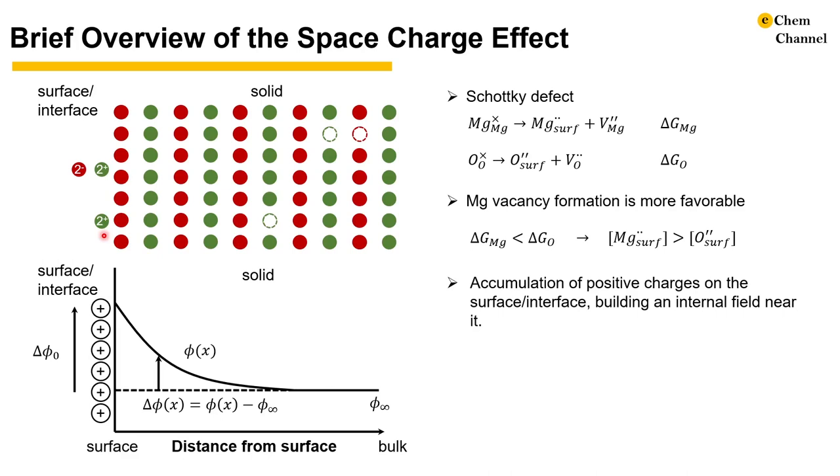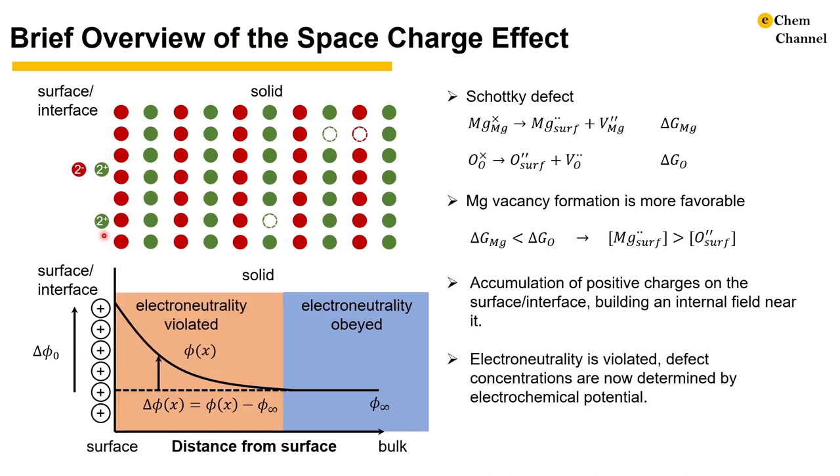We care about the difference between the potential in the space charge layer and the bulk, so we have the delta phi defined here, with delta phi zero as the space charge potential. In the bulk, the electroneutrality is obeyed as the potential is flat. Within the space charge layer, the electroneutrality is violated as we have the potential variation.